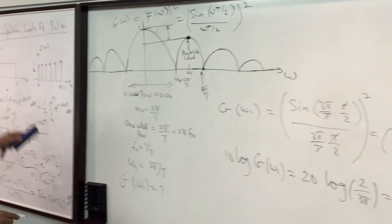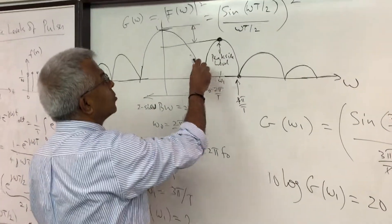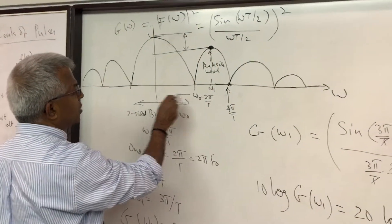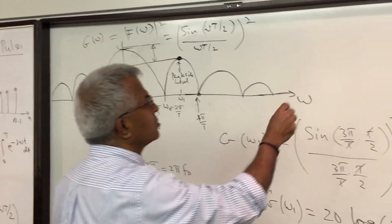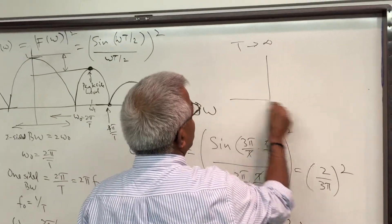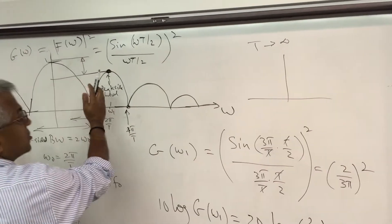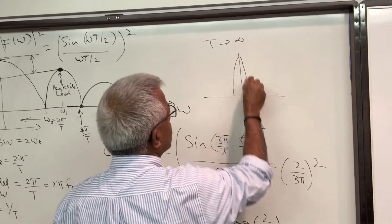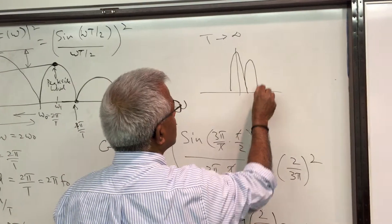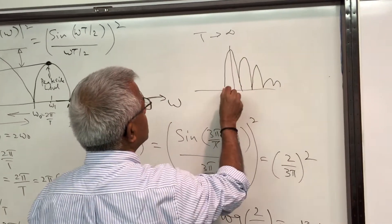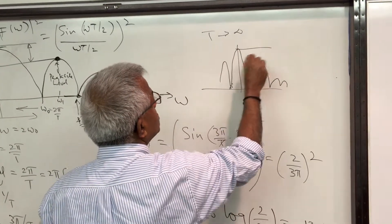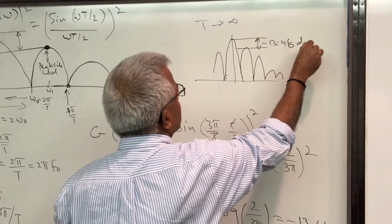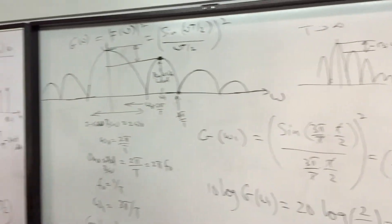The interesting point is that this result is independent of the pulse length T. You cannot push the peak side lobe down by increasing the pulse length. As T increases, the main beam shrinks and ω₁ moves toward the center, but the peak side lobe level remains at −13.46 dB.